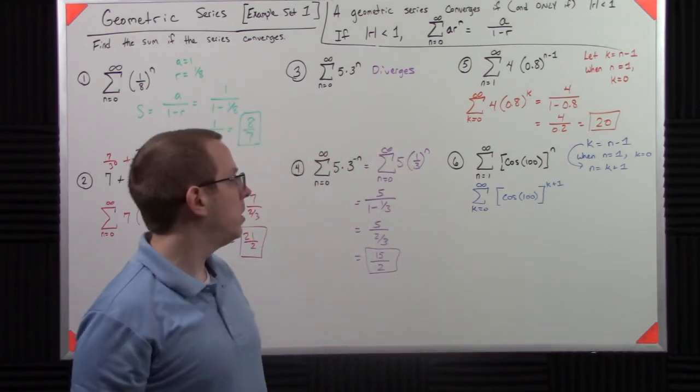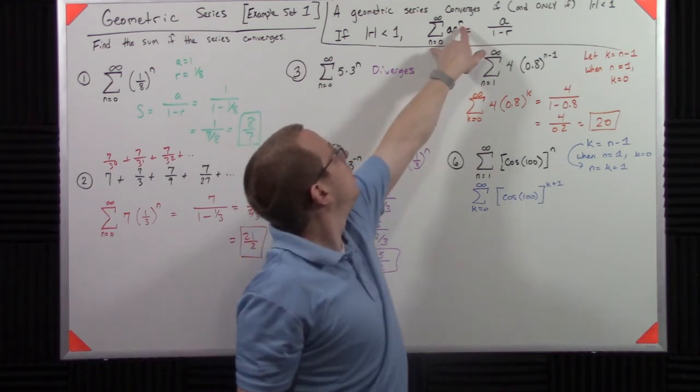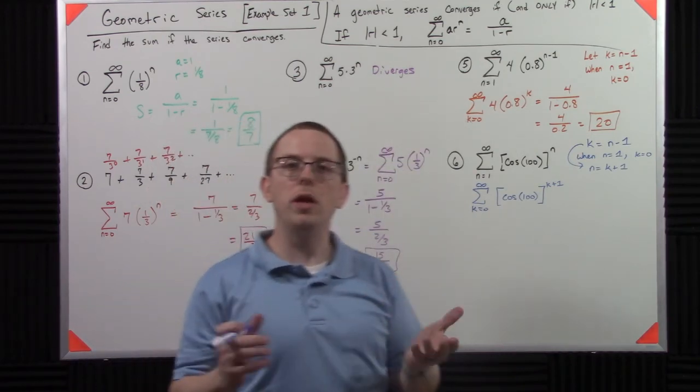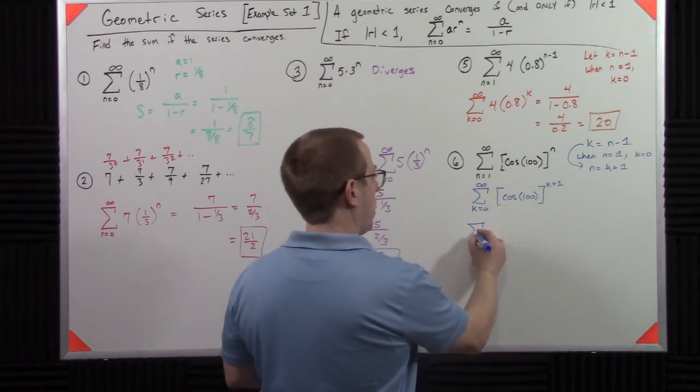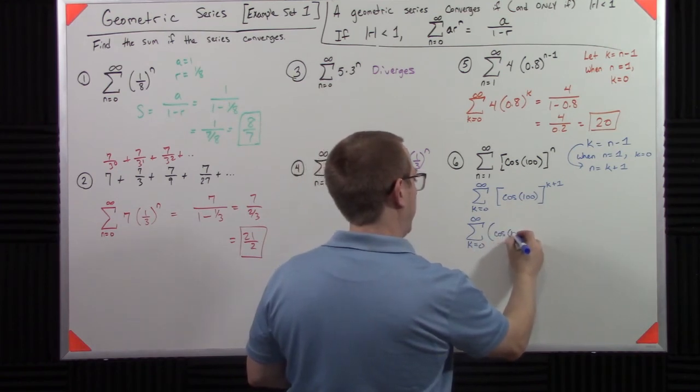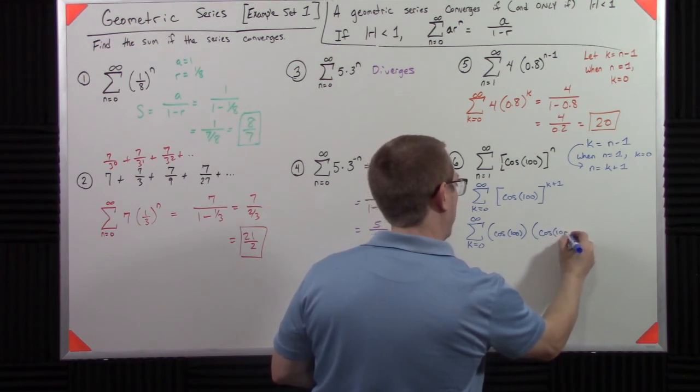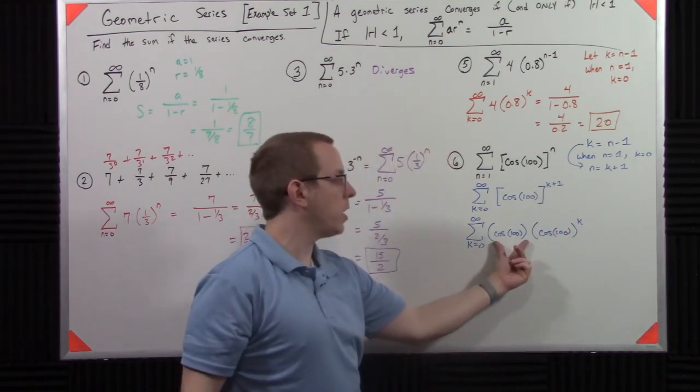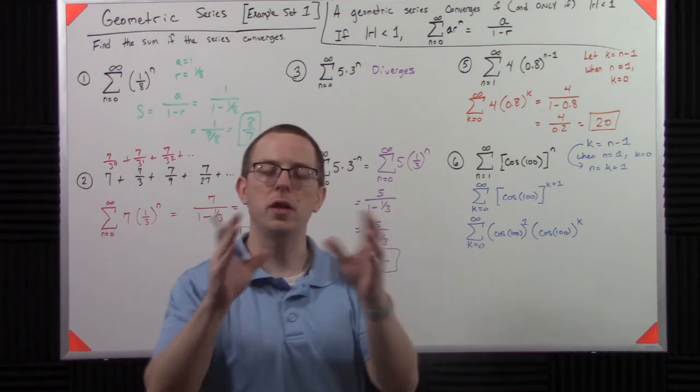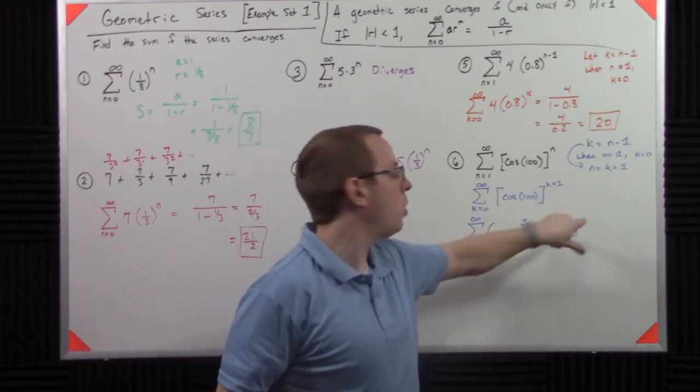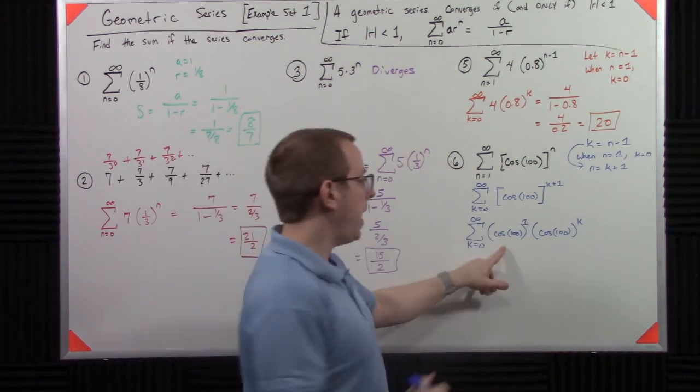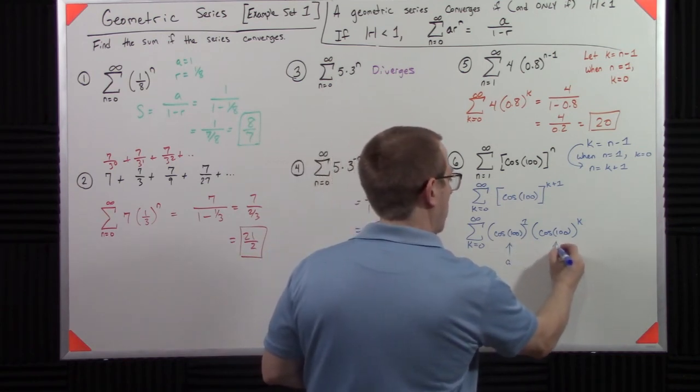But now we're kind of hosed, right? Because the formula, that has to be, that isn't n plus 1. That's just n. So how do I solve this? Well, what I do is I use the properties of exponents. So I can say, all right, I can split off cosine of 100 and cosine of 100 to the k. Because this is like cosine of 100 to the first power, right? The properties of exponents say I can split that out as long as the total exponents add up to this, then I'm good. That's just standard algebra. Well then now that tells me that this is a and this is r.